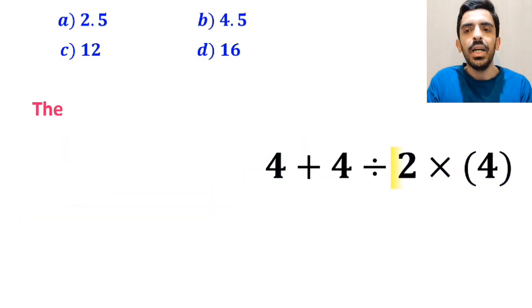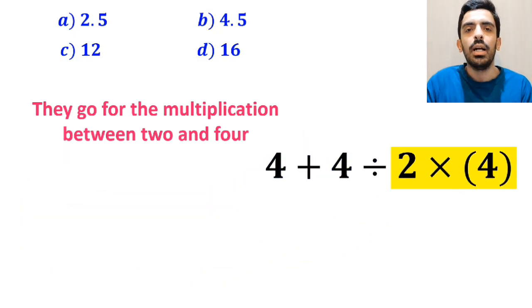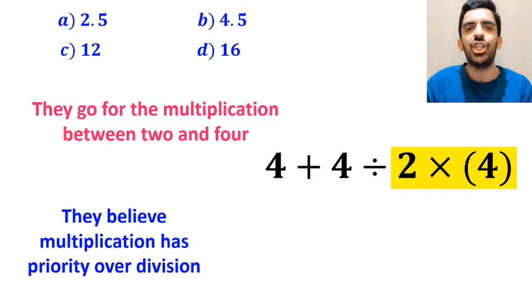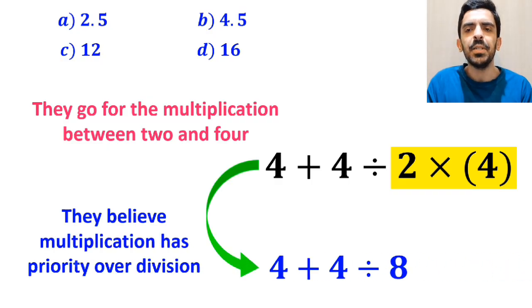In the next step, they go for the multiplication between 2 and 4, because they believe multiplication has priority over division. So, this expression simplifies to 4 + 4 ÷ 8.